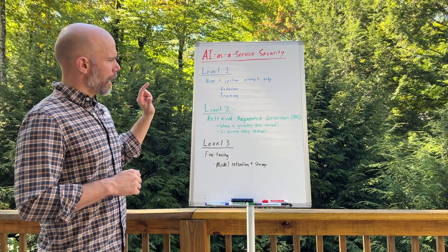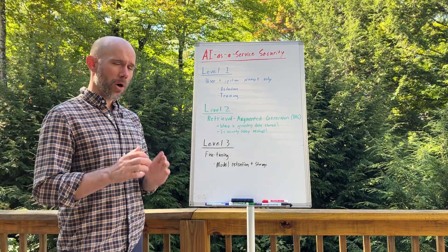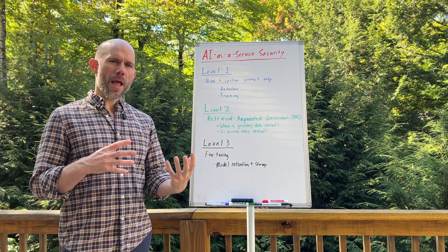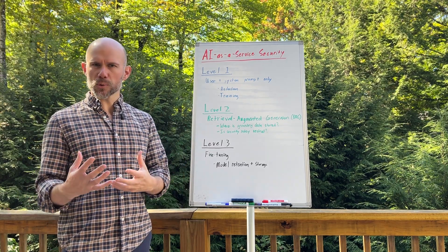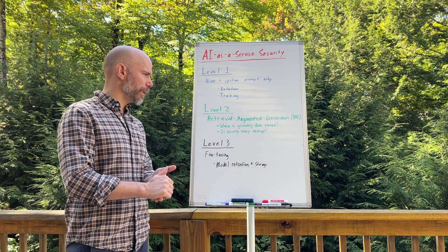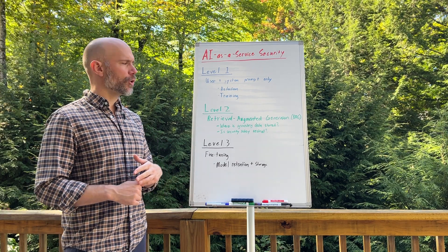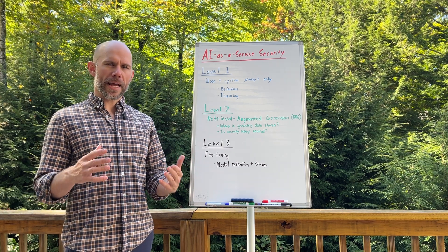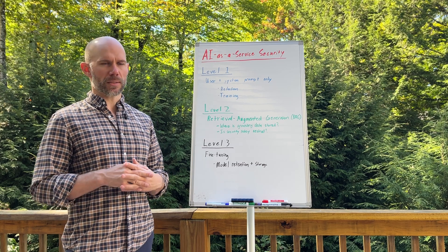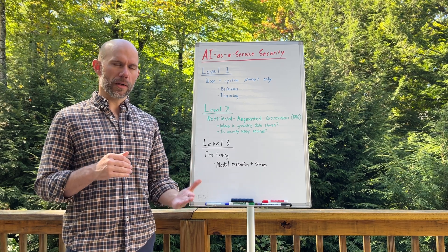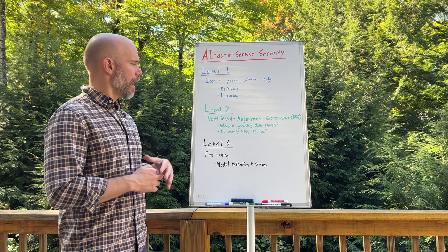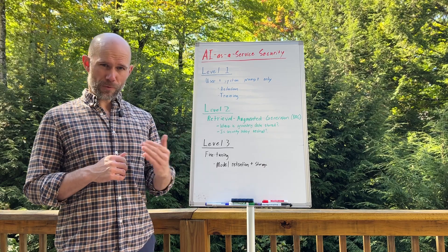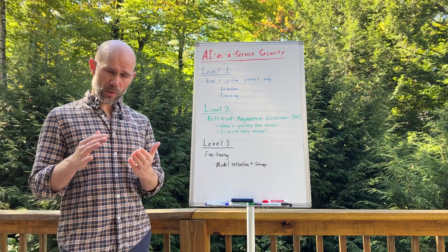Moving down to level two, I'm going to talk about retrieval augmented generation. This is using a generative AI model in combination with some sort of grounding data. This allows you to be more accurate with your responses and you can force the model to refer to information in a certain knowledge base. It's not a surefire way to avoid hallucinations, but it can improve accuracy and allow you to keep the information up to date instead of just relying on the training data.